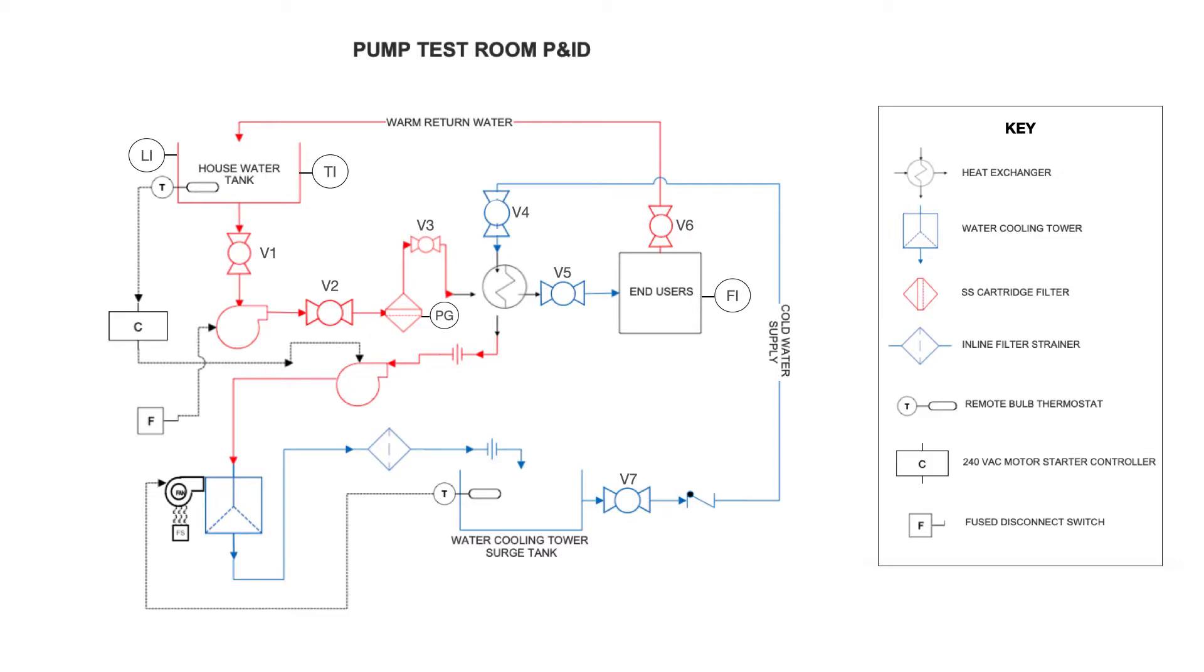And then the water is then pumped out to the water cooling tower where a fan blows a column of air up through the water which cools it down. And then as it leaves the water cooling tower, that cold water goes through an inline filter strainer. Then it goes through a union and it gets dumped into the water cooling tower surge tank and the process repeats itself over and over again.